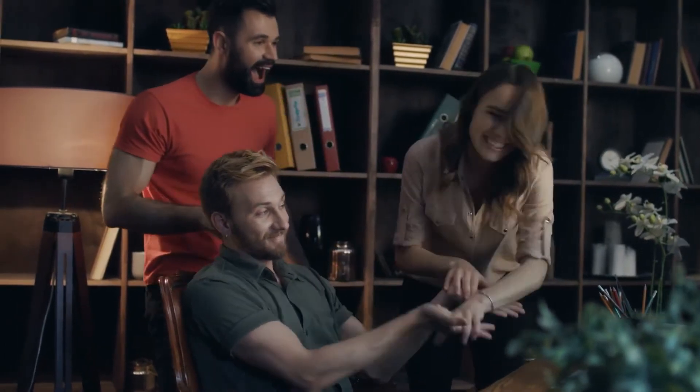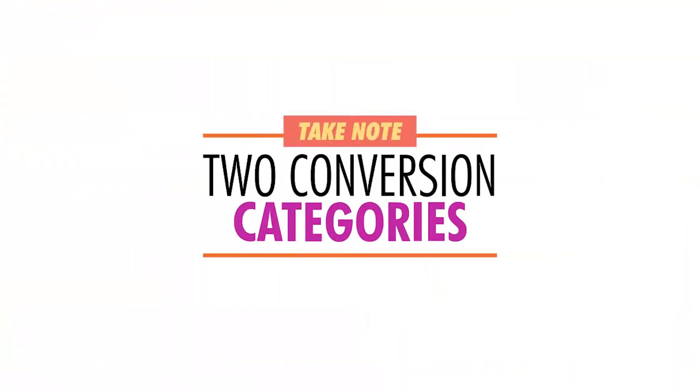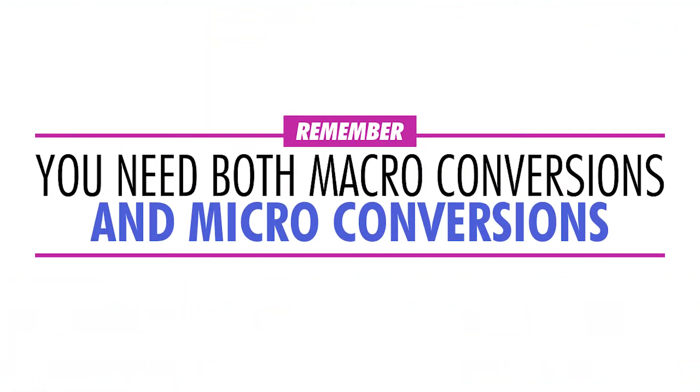Because organic content marketing can work if you know what you're doing as you publish that content to platforms such as Facebook and Instagram. There are two main conversion categories — the way I teach my students to look at things when it comes to organic content marketing via social media — and they are macro conversions and micro conversions.